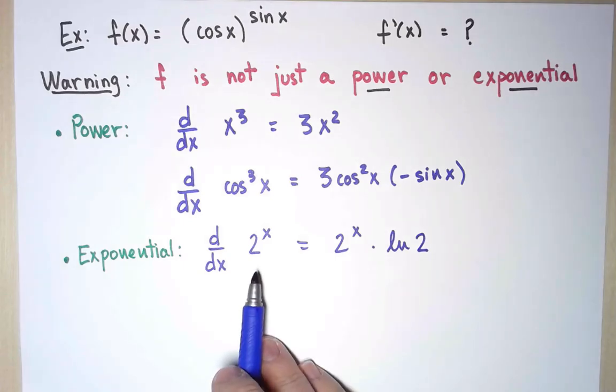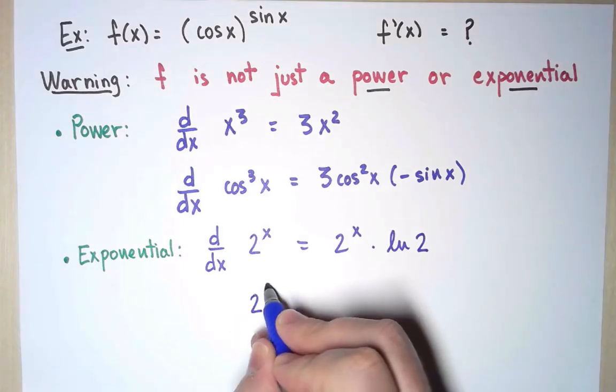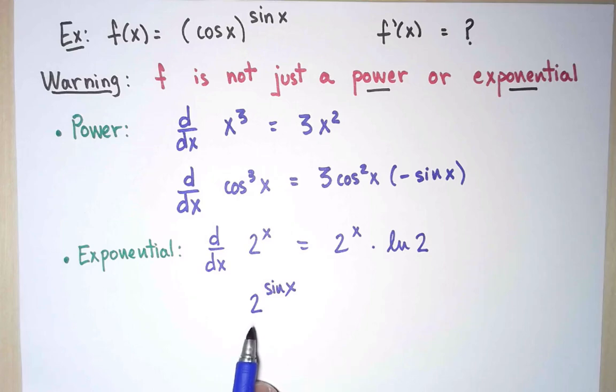And again, I could have a function like this composed with something else. For example, 2^(sin x). And to take its derivative, I would use this rule together with chain rule.